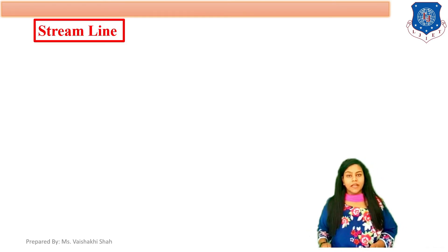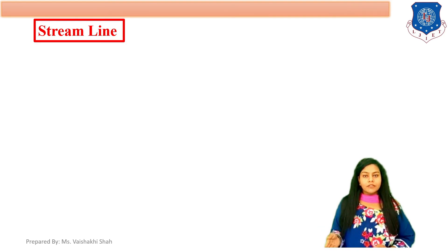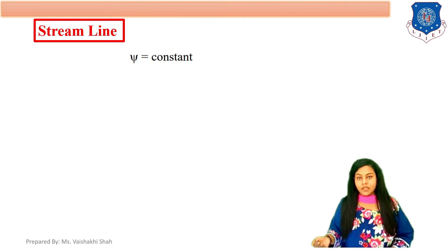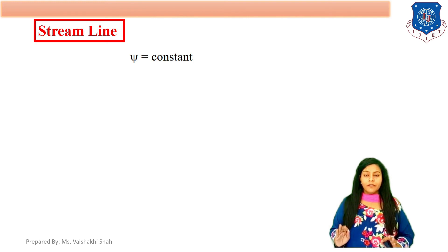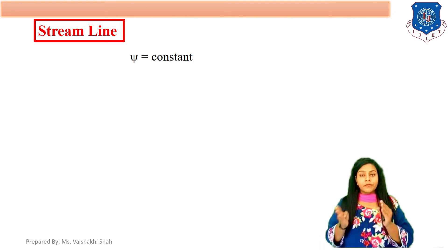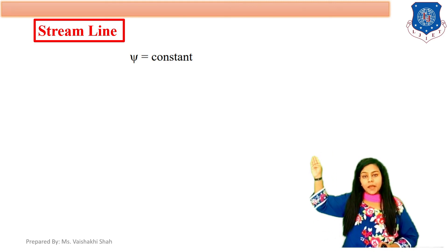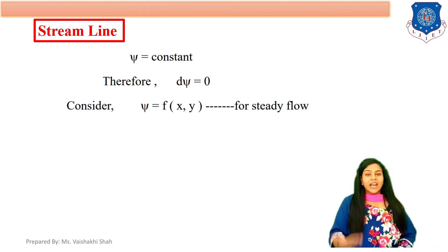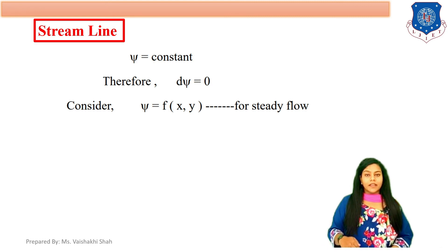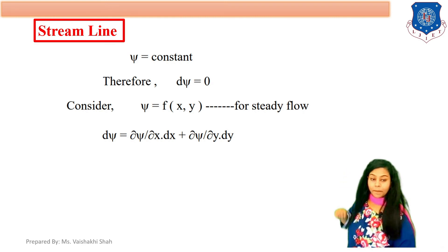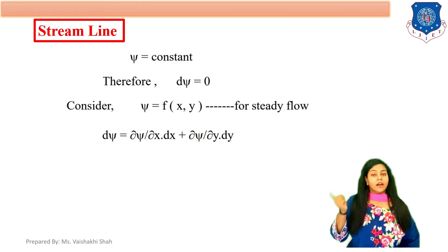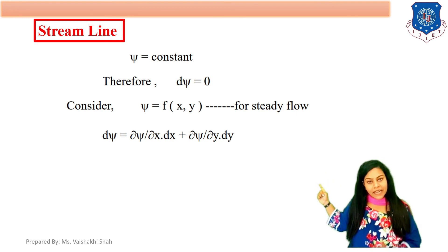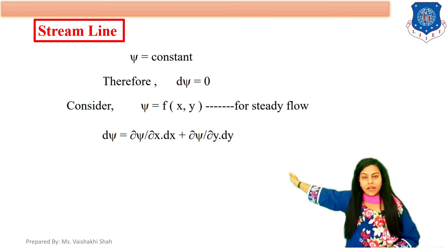Next is the streamline. For a streamline, the stream function psi is constant, and that line is called a streamline — connecting points where psi is constant. So psi equals constant means d psi equals 0. Considering psi as a function of x and y and applying the chain rule: d psi equals del psi by del x into dx plus del psi by del y into dy. We know that del psi by del x equals v and del psi by del y equals minus u — wait, del psi by del x is v (positive), so substituting: v into dx minus u into dy... Actually: minus v into dx plus u into dy equals 0.